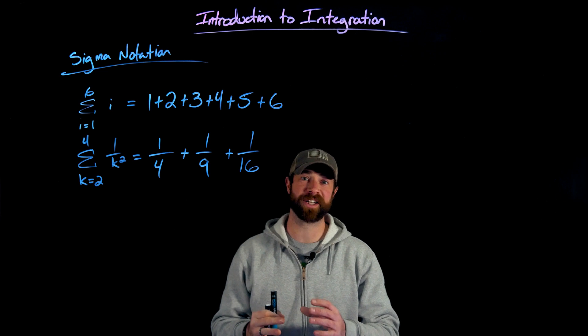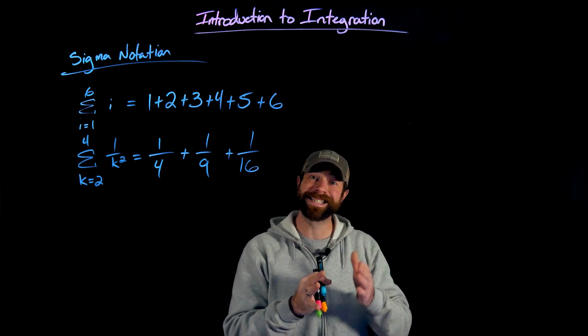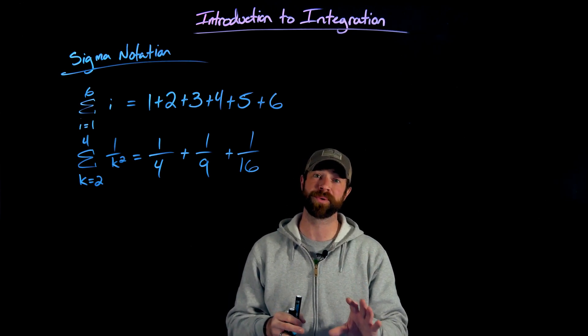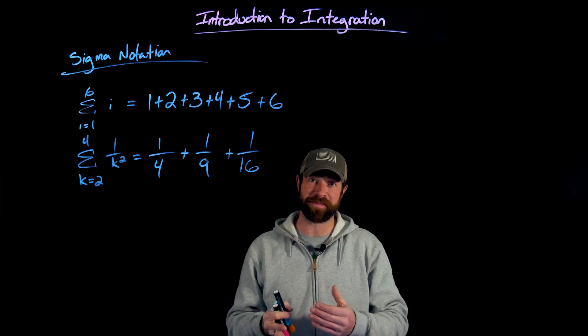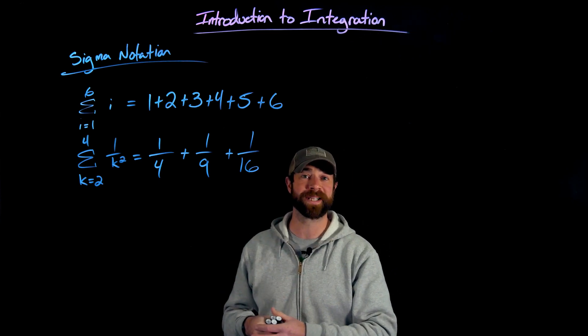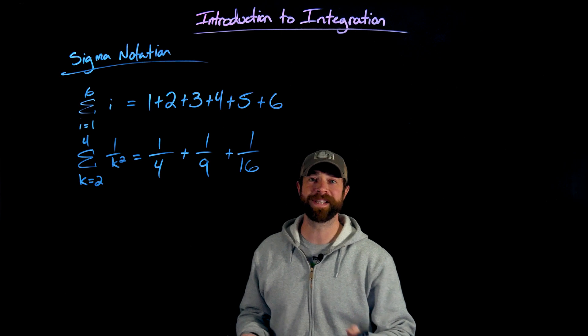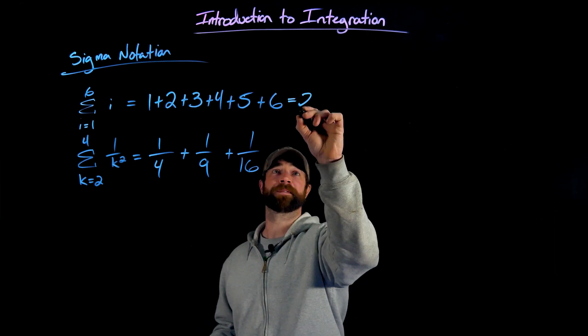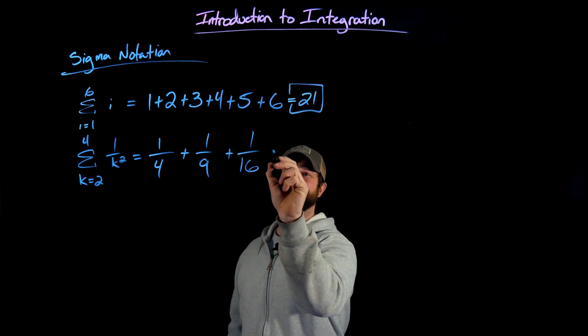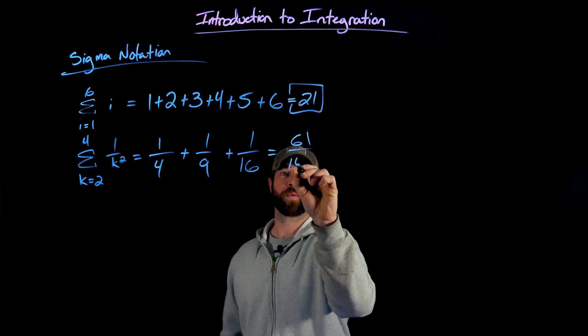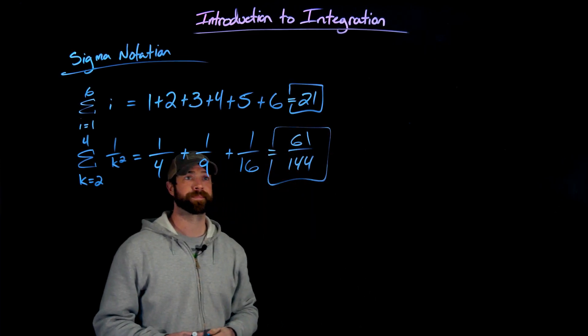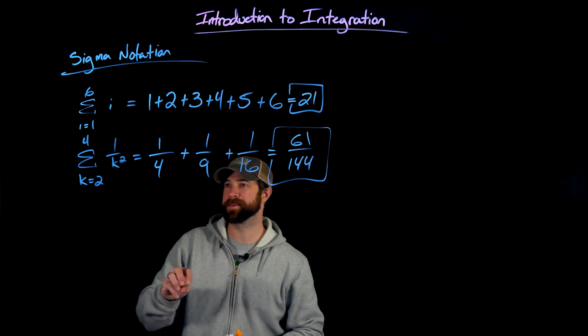We need this notation because what we're going to do is add these series of rectangles, the areas of these rectangles together. In fact, as I alluded to, we're going to have an infinite number of these rectangles. So we have to get pretty proficient with working with this sigma notation. In each of these cases, we have these sum to certain values. This first one is 21. If I add all those values up, if I add these fractions together, I'll get 61 over 144.